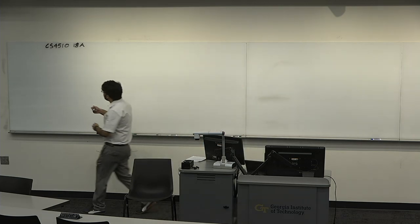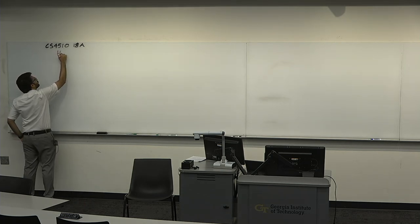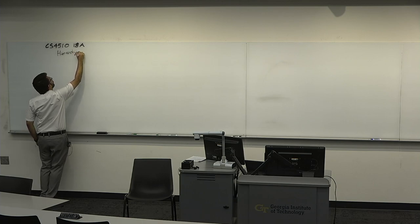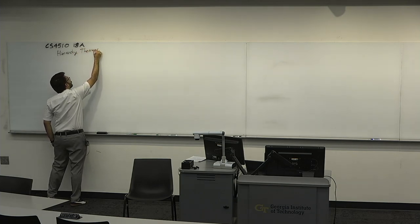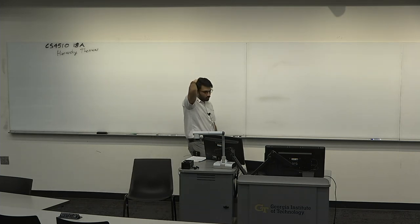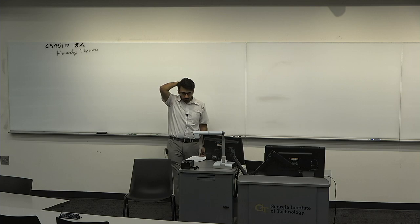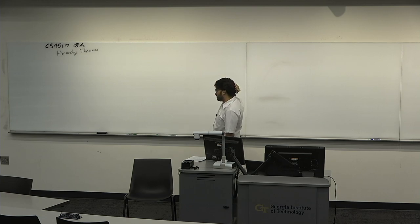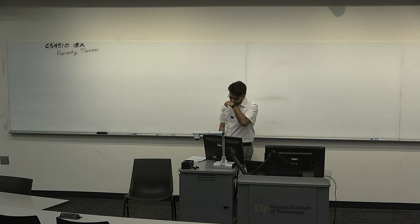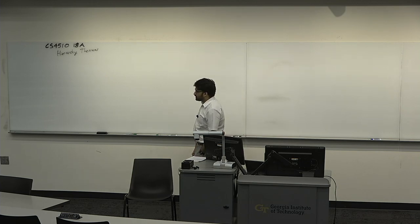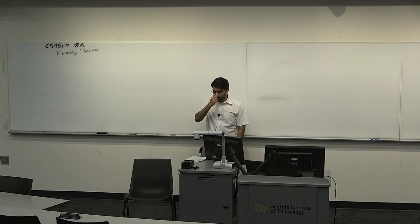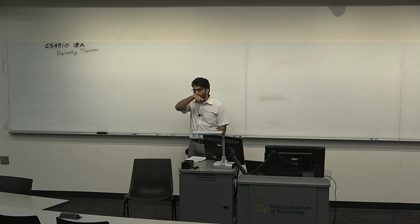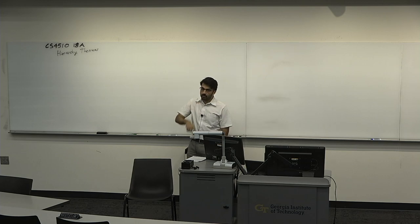Today we're going to talk about two things. This is probably one of my favorite lectures — the second half more than the first. The first half is on hierarchy theorems. We're going to talk about hierarchy theorems, the very first theorems in complexity theory, which Hartmanis and Stearns proved. By proving these theorems, they founded the field of computational complexity, for which they won a Turing Award. Hartmanis recently passed away. Every complexity theorist was a student of his and so on. In the second half, we're going to talk about relativization.